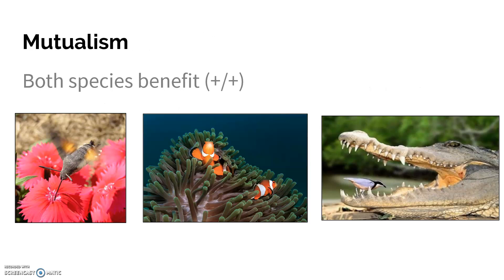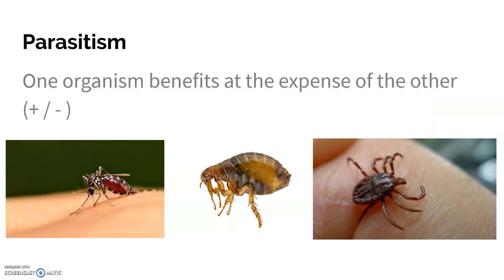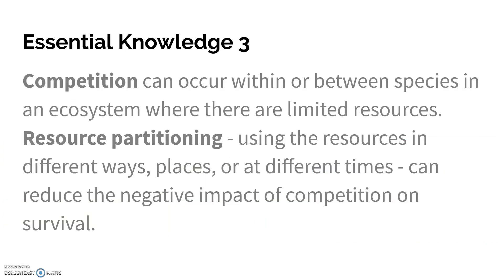In commensalism, only one species benefits while the other is unaffected. In parasitism, only one organism benefits whereas the other is negatively impacted. Competition can occur within or between species in an ecosystem where there are limited resources.